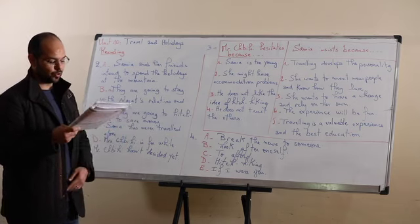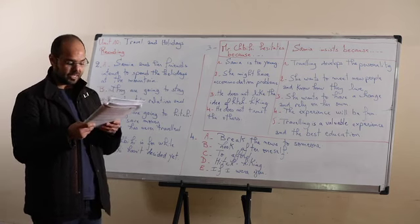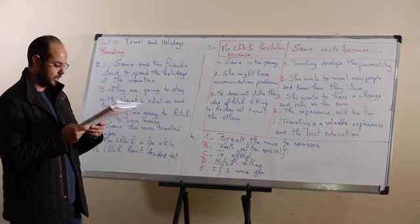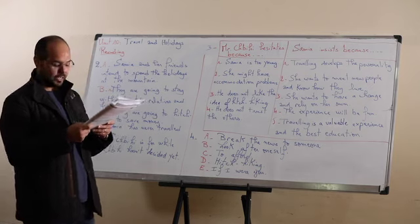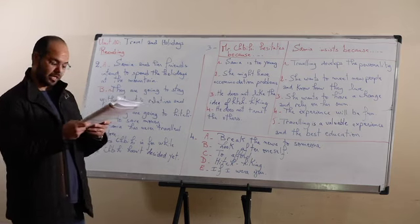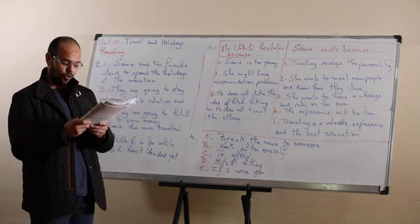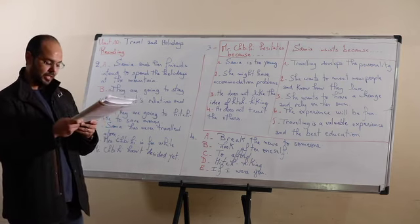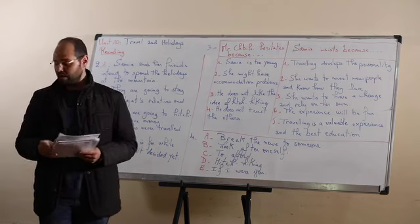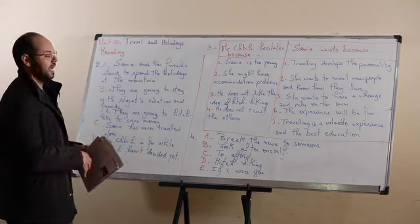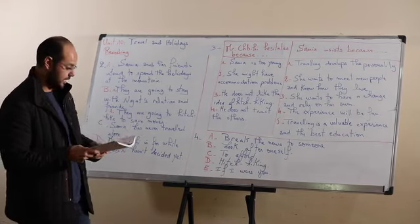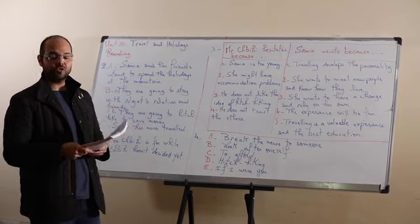As a summary to the text: Samya, an 18-year-old and the only daughter, finally asked her father whether she could spend the holidays with her friends in the mountains. Mr. Shea didn't know what to say. According to him, Samya is too young to go off on her own, she might have accommodation issues, and most of all he doesn't trust others. On the other hand, Samya was determined — for her, traveling develops one's personality, it's a valuable experience and the best education. She also wants to meet new friends, know how they live, and rely on herself. Based on our answers to the comprehension questions, we are going to discover Mr. and Mrs. Shea's reactions.